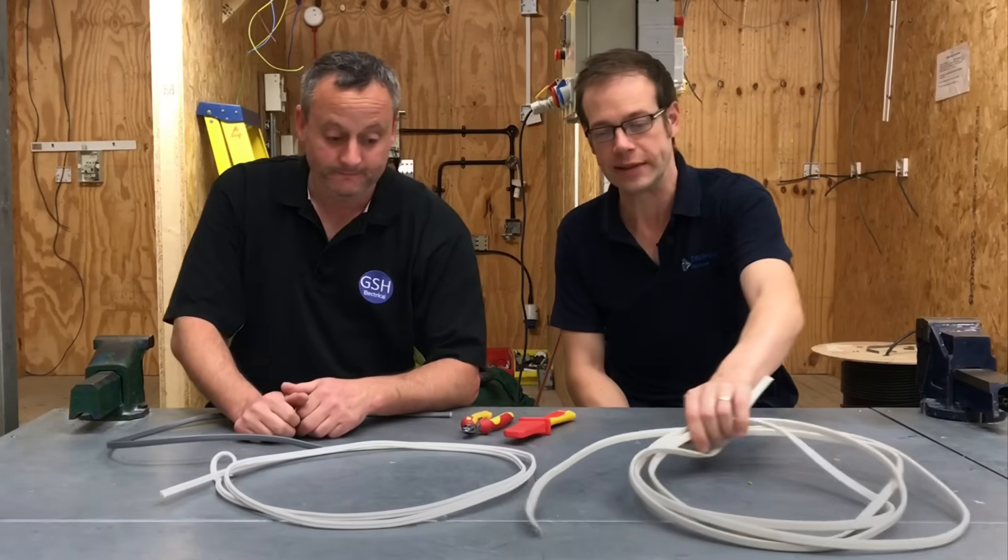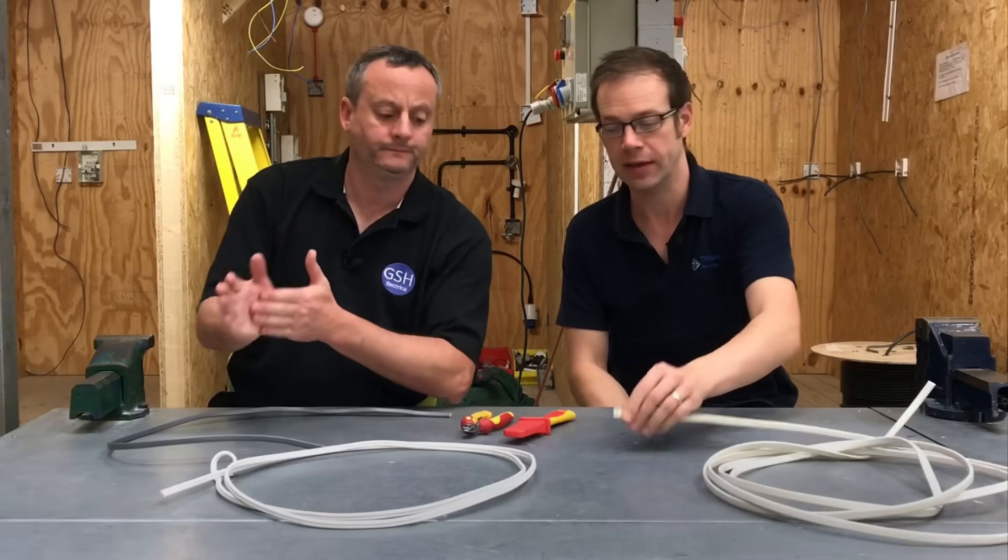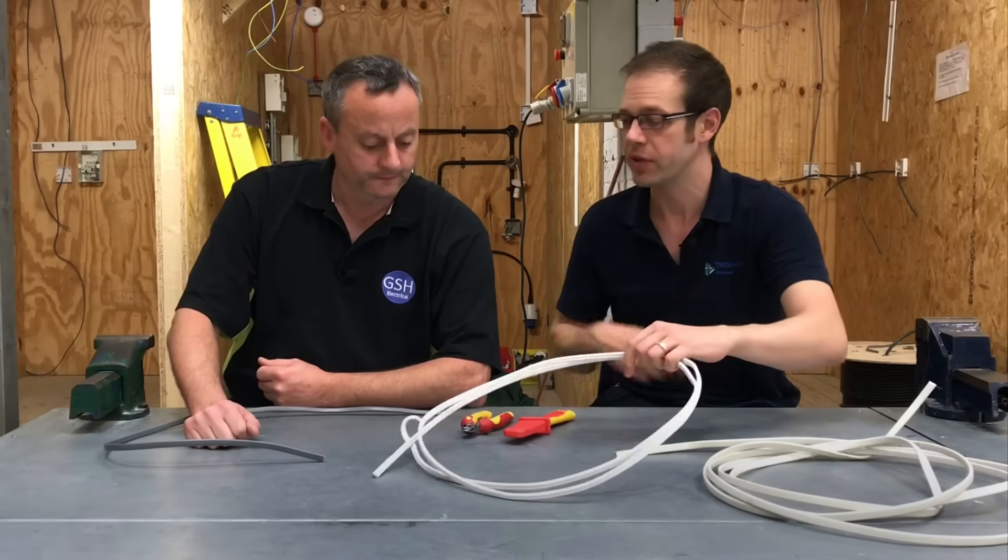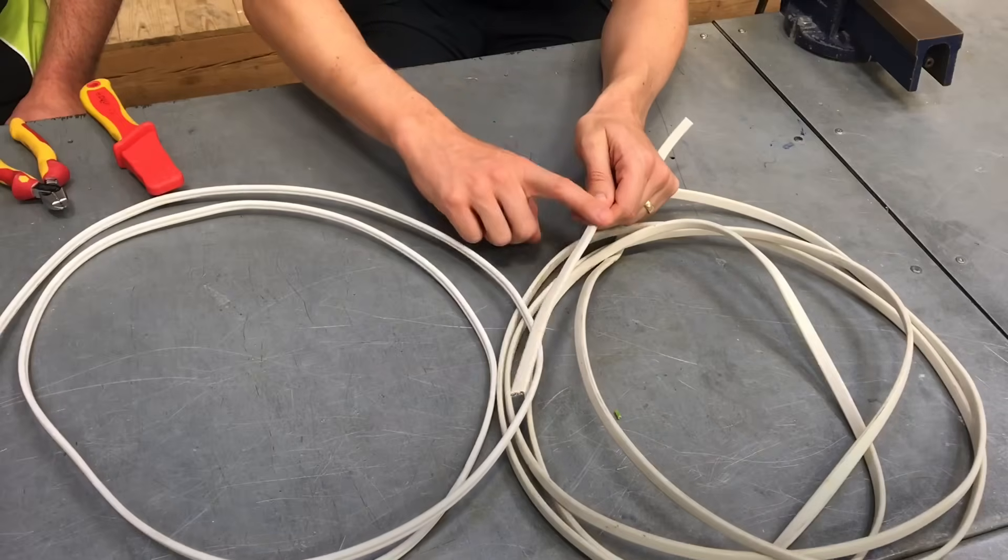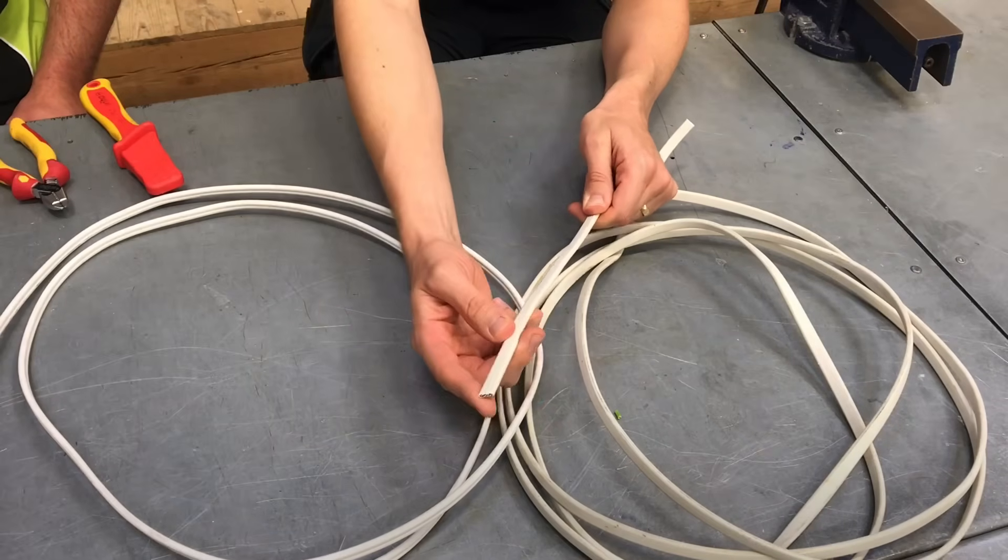No, over here we've got some white covered cables. So again, we're still looking at a similar type. So we've still got twin and CPC, and in this case we've got three core and CPC, but it's got this white sheath on the outside. And what does that white sheath tell us about this cable?